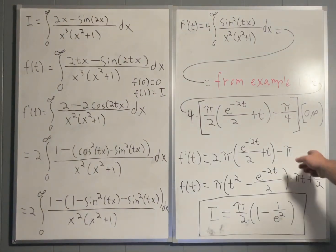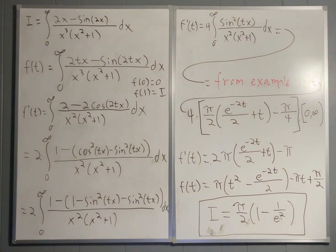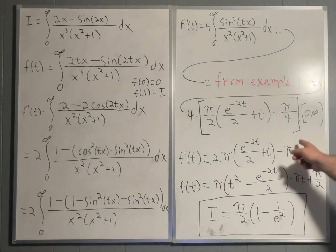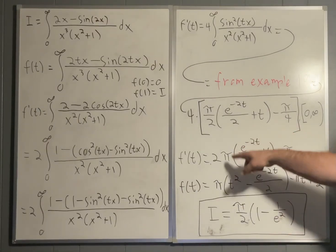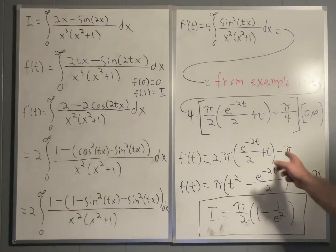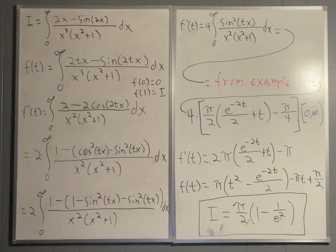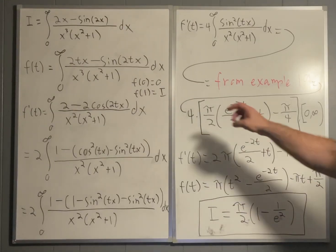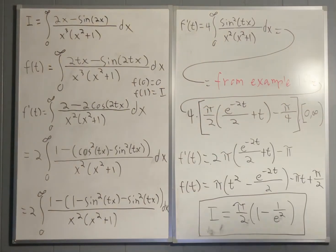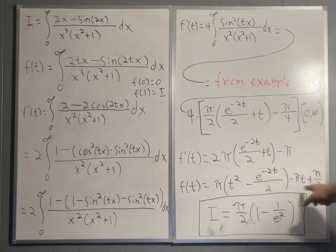And then to arrive at f of t, you simply perform some pretty basic integration. So I'm not going to bother doing the steps on that. Most of you could probably do that in your head. The only part that might be difficult is you'll know that you would get a constant of integration when you integrated that. But that can be found to be pi over 2 by plugging in the fact that our function evaluated at t equals 0 is equal to 0. But I just jumped right to the punchline. There's our f of t. That's our final result for f of t.